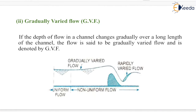Next is gradually varied flow. If the depth of flow in a channel changes gradually over a long length of the channel, as seen here, the flow is said to be gradually varied flow and is denoted by GVF.